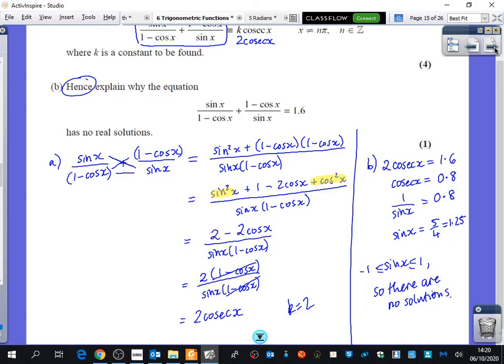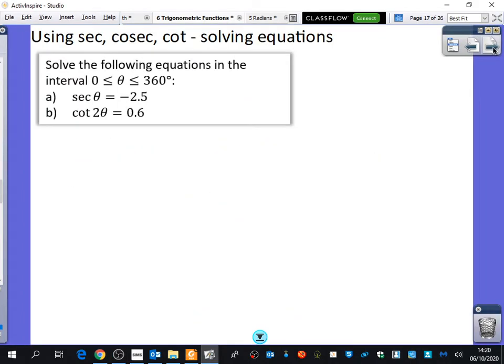So this exercise, 6C, is split into two parts. It's split into proving ones, like you've just been doing for the first half of today's lesson. And the second half of it is solving equations. So if you've been able to keep up with the stuff on solving equations, this is just an extension of that. If you haven't been able to keep up with that part, this is a good chance for us to recap some of those things with solving equations.